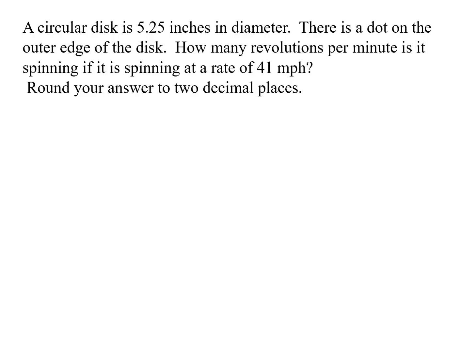A circular disk is 5.25 inches in diameter. There is a dot on the outer edge of the disk. How many revolutions per minute is it spinning if it is spinning at a rate of 41 miles per hour?